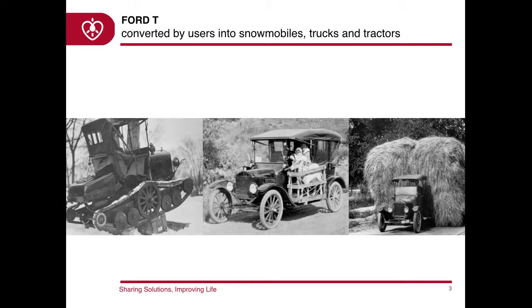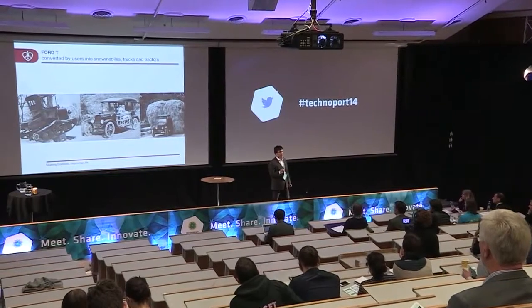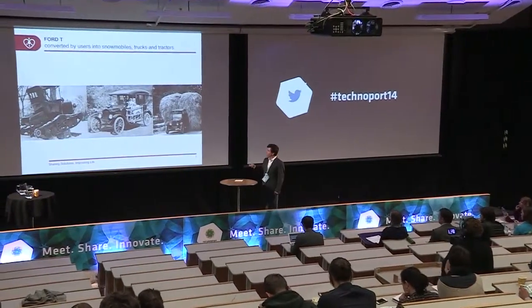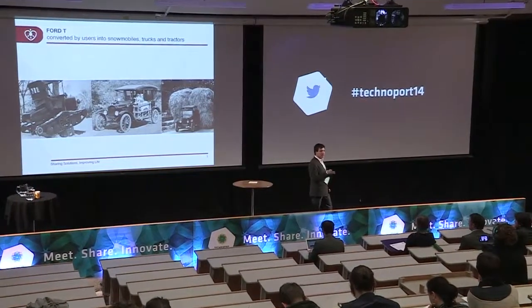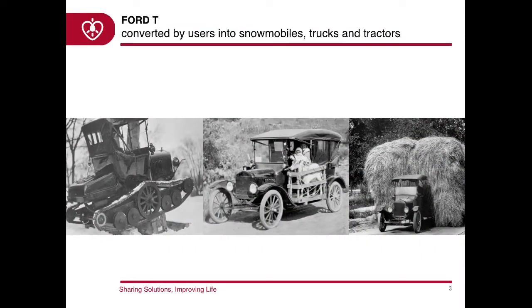We know that often users, because they are unhappy with the solutions that producers provide them, they innovate. We all know about Mr. Ford. He created Ford Motor Company and was able to produce cars at a very low cost — mass-produced cars. But some consumers were not completely happy. For instance, there were farmers in Michigan who, because of a lot of snow, needed to make many modifications to use the car during the winter. By doing that, they created the first snowmobile. The first truck and the first tractor were also created by farmers who were not happy with Mr. Ford's solution.